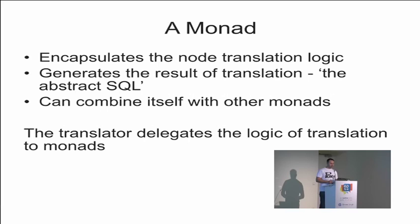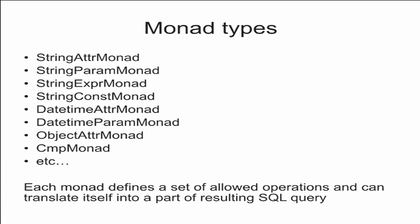A monad is a container which encapsulates the translation logic. Each node type has its own translation logic. The translator walks through the tree and delegates the translation to different monads. Each monad accumulates data and generates a part of a SQL query as the result. Pony has different monads for different types and different attributes. Each monad defines a set of permitted operations and how it will be combined with other monads. For example, a StringAttr monad can generate a join operation, and a StringParam monad puts a string parameter into a query.